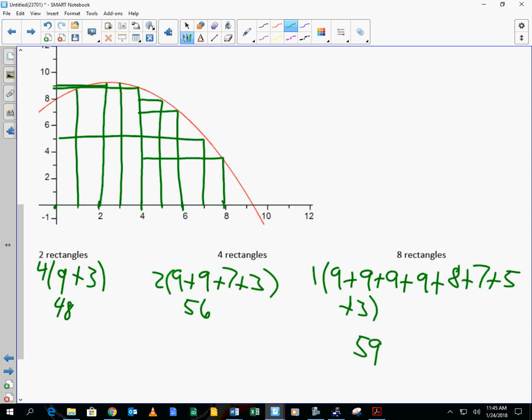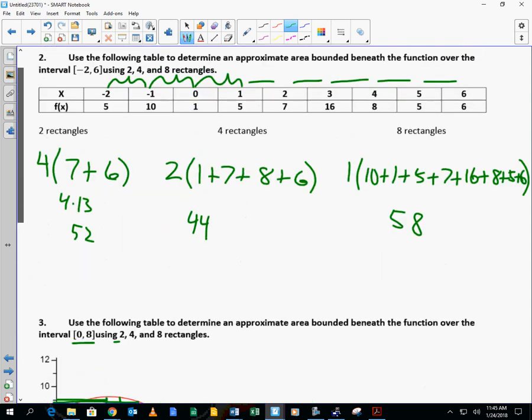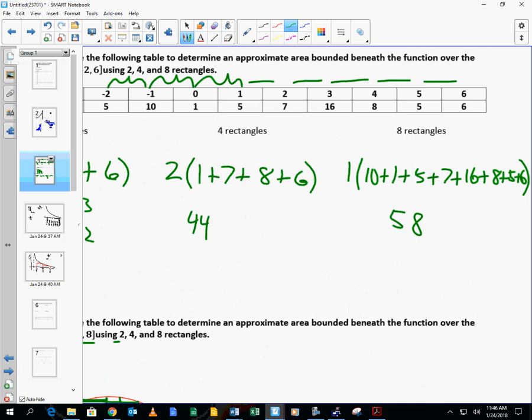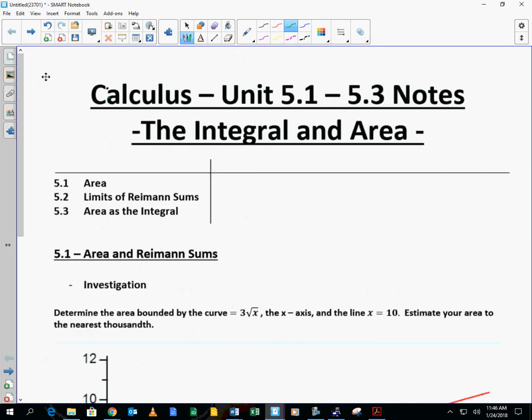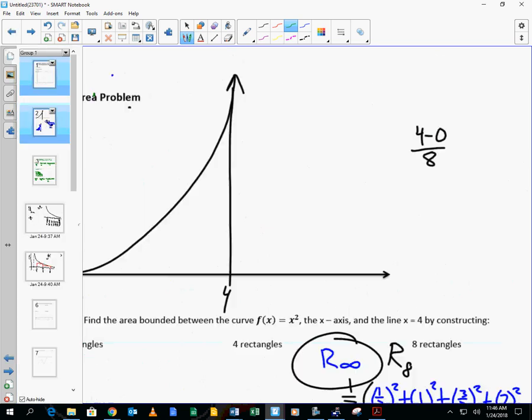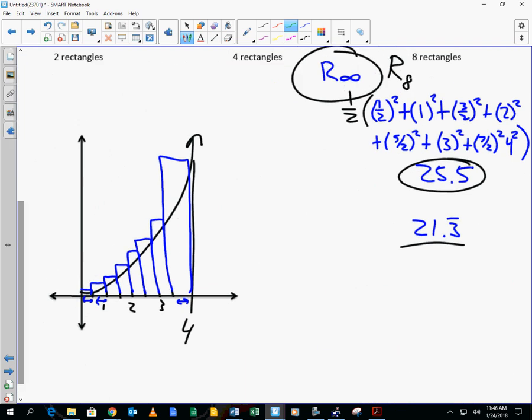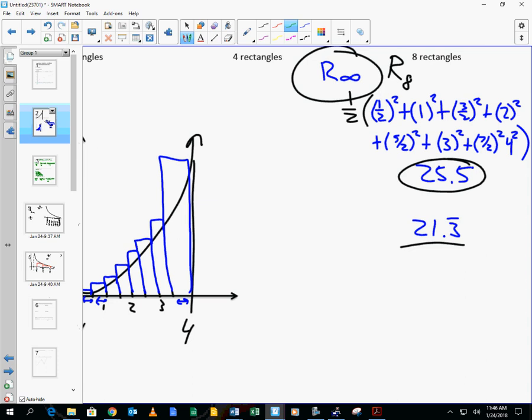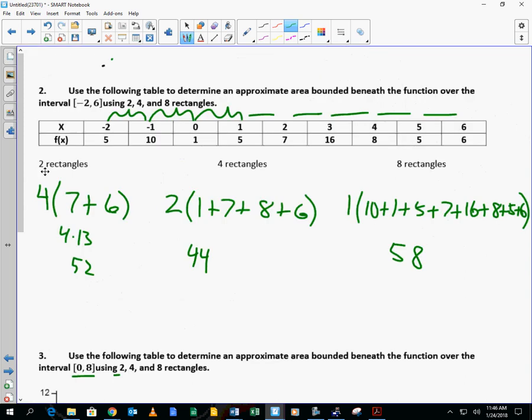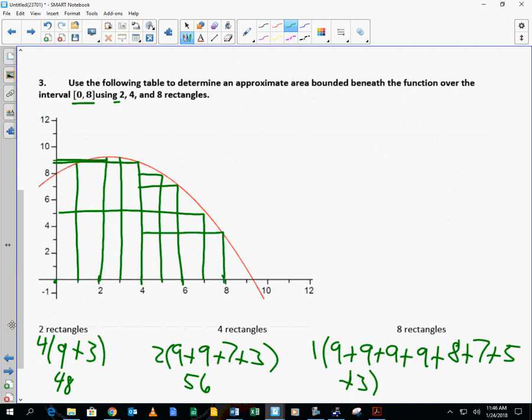So you can see that you've got these three examples. You've got your first example where we found the area underneath here, and we found the heights by plugging them into x squared. Here you look at the function value to generate the height. And here you just use your picture to estimate. And that's going to be the basis for your assignment today. So take out your assignment.